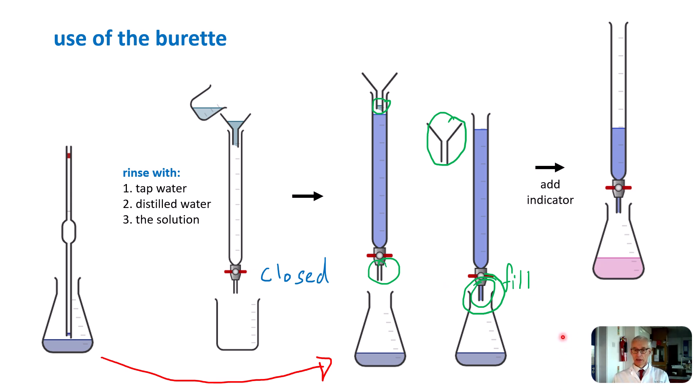Having noted the initial volume, we add some indicator and generally we'll see that there's a color change. At the color change point we stop the titration and we take the final volume. The volume delivered by the burette is the difference between the initial and the final and that is called the titer.